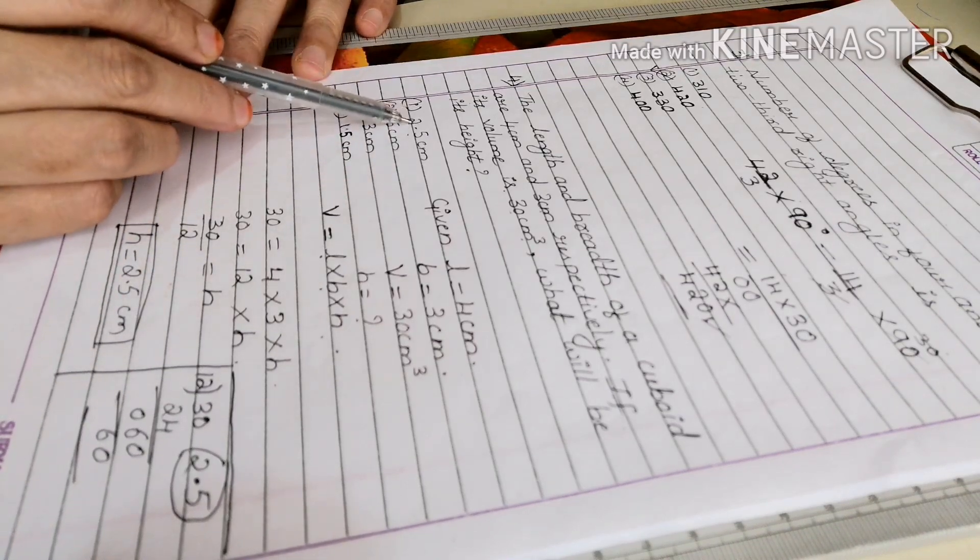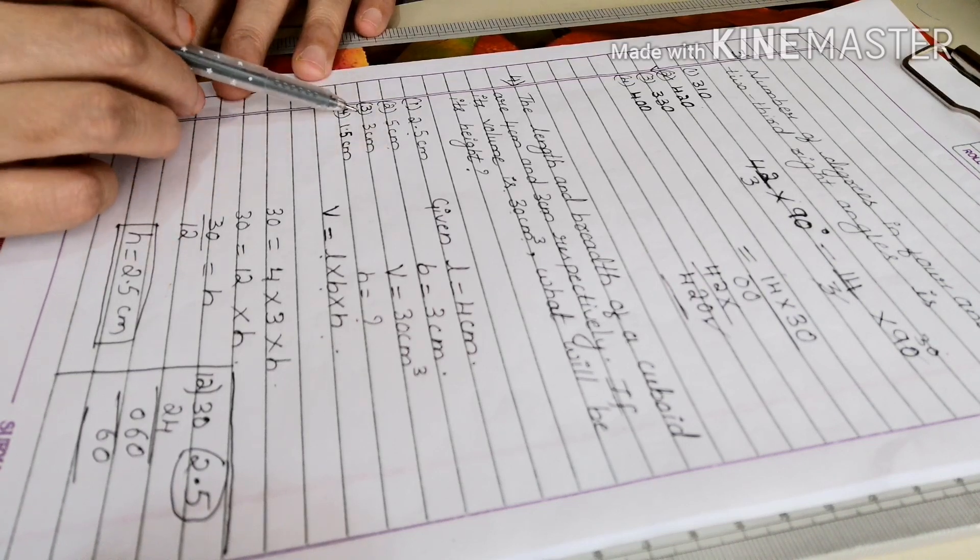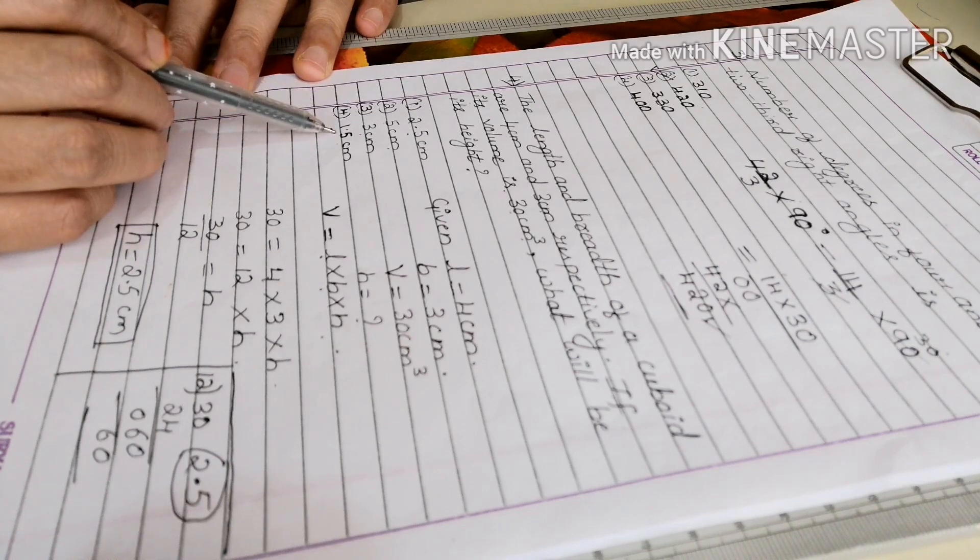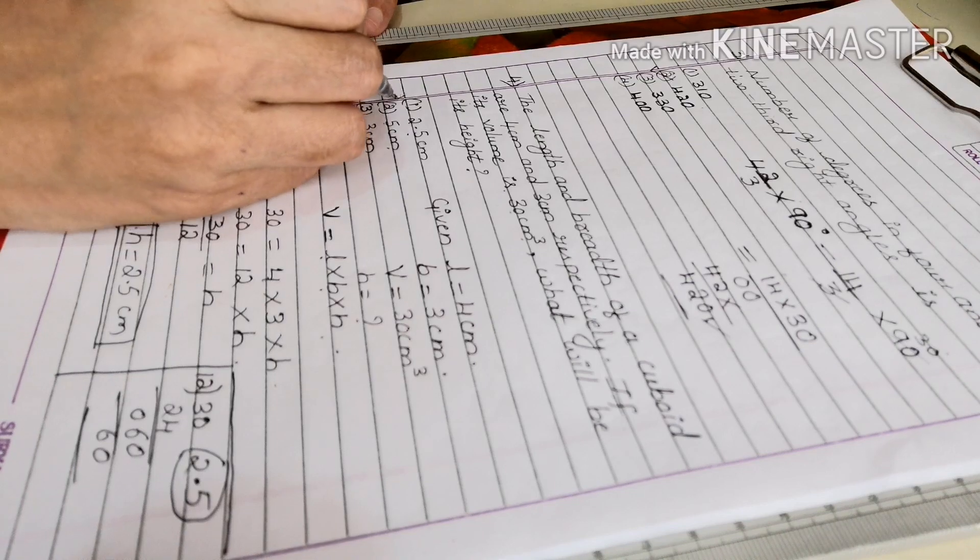Option a, option b 5 cm, option c 3 cm, option 4 1.5 cm, option a 2.5 cm. Option a 2.5 cm is the right answer.